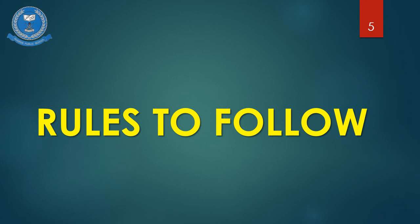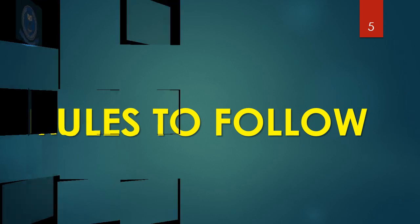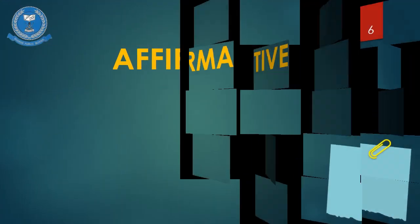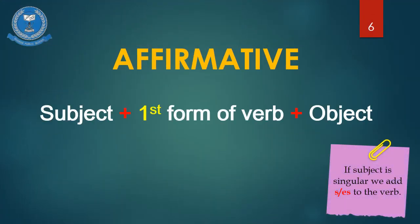Rules to follow while making a sentence of present indefinite tense. Affirmative: Subject plus first form of verb along with object. If the subject is singular, we add S or ES to the verb. This will not be applicable if the subject is plural.